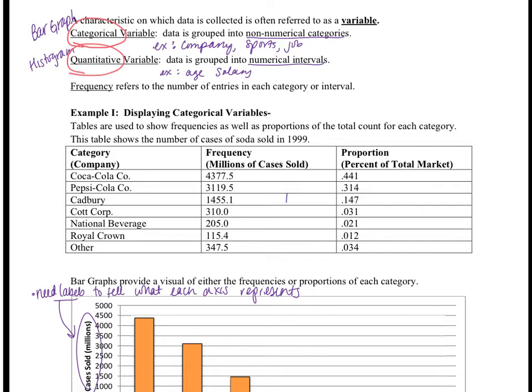In this first example of categorical variables, we're discussing the total count of cases of soda sold in 1999. We have different brands with their frequencies and proportions. The proportion is the percent total. To figure out the proportion, add up all millions of cases sold, then calculate the percentage or proportion for each brand in that market.